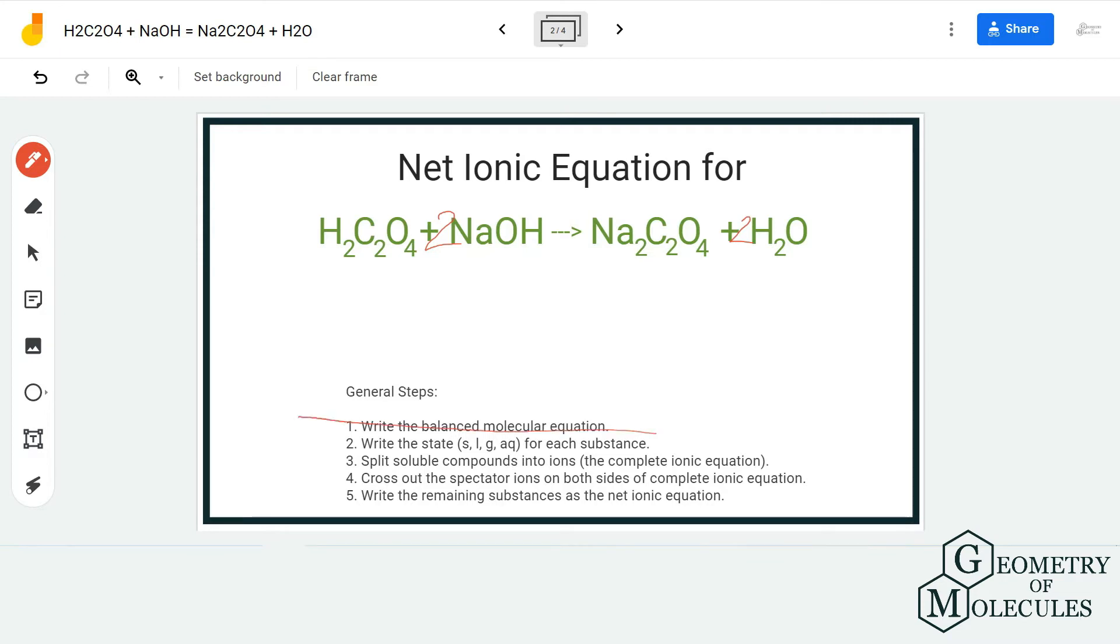Once you have done that, the next step is to write the states of these compounds. H₂C₂O₄ will be in aqueous state. However, it is a weak acid so it will not completely dissociate. While you are writing ionic equations, it is vital to know the kind of acids or bases they are. If it is a weak acid, it will not completely dissociate in water, and same goes for base.